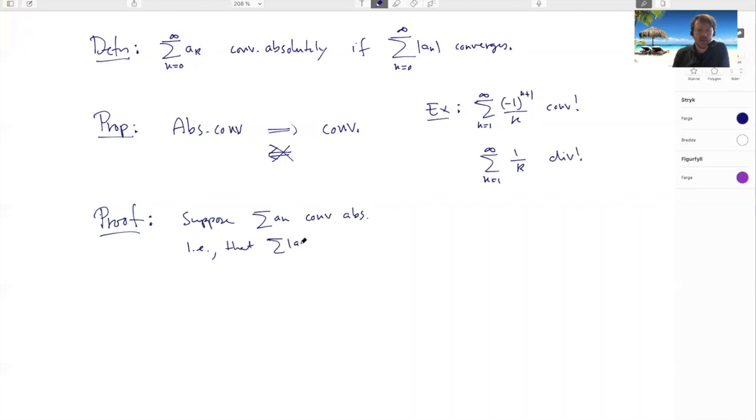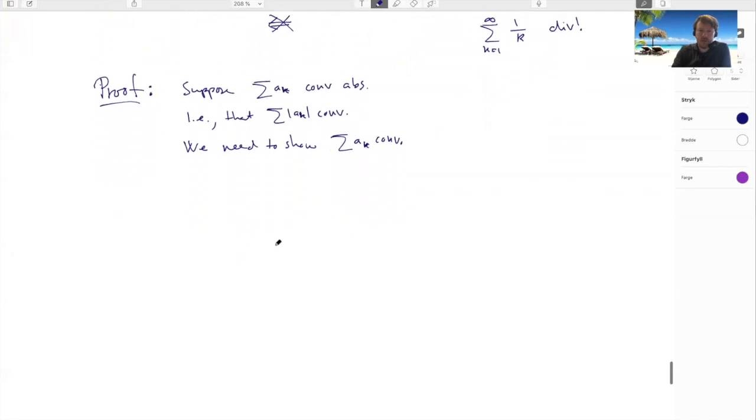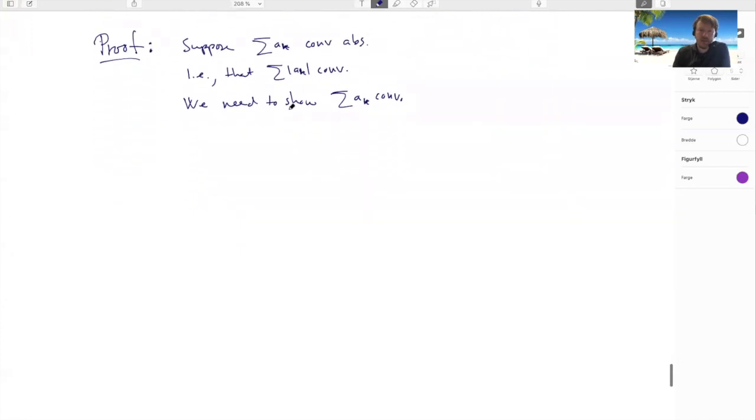We need to show that this guy here converges in the usual sense without the absolute values everywhere. So now that I've stated everything, we can scroll down here.